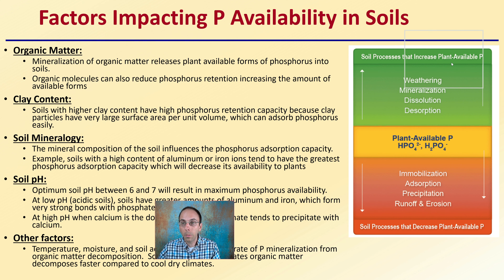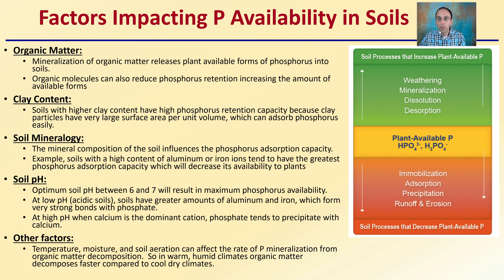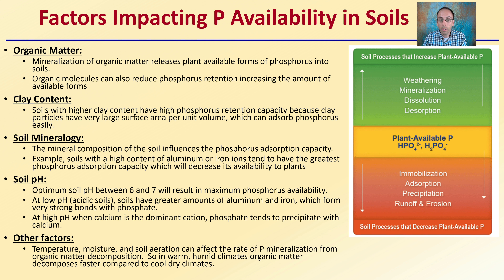What impacts the plant availability of phosphorus? There's a combination of factors. Of course, pH is one of them. We're also looking at organic matter — mineralization of organic matter releases plant-available forms of phosphorus into soils, and organic molecules can also reduce phosphorus retention, increasing the amount of available forms. Clay content in soils also matters: soils with higher clay content have high phosphorus retention capacities, simply because clay particles have a very large surface area per unit volume, which can absorb phosphorus very easily.